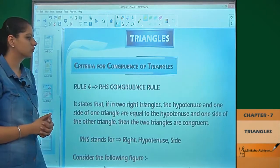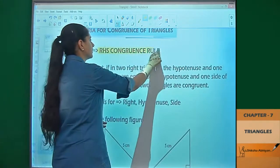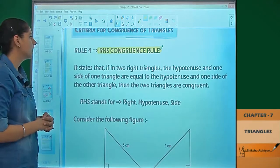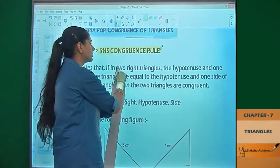Now the fourth and last rule is RHS congruence rule. This is the fourth criteria and the last rule. RHS congruence rule allows us to determine when two right triangles are congruent.